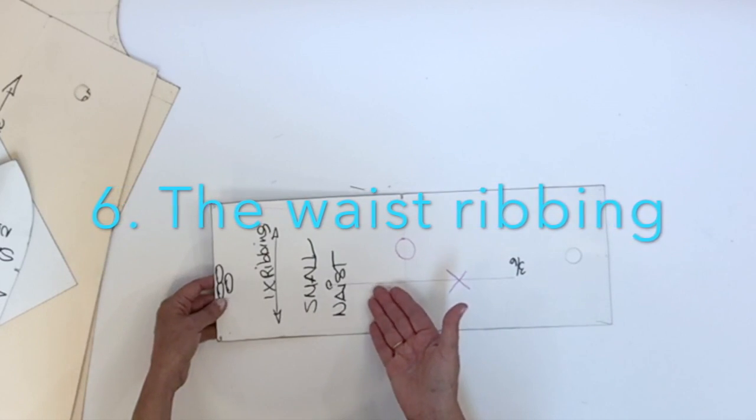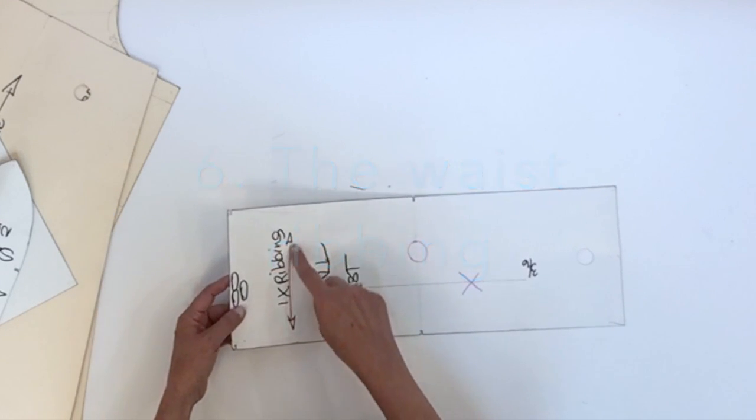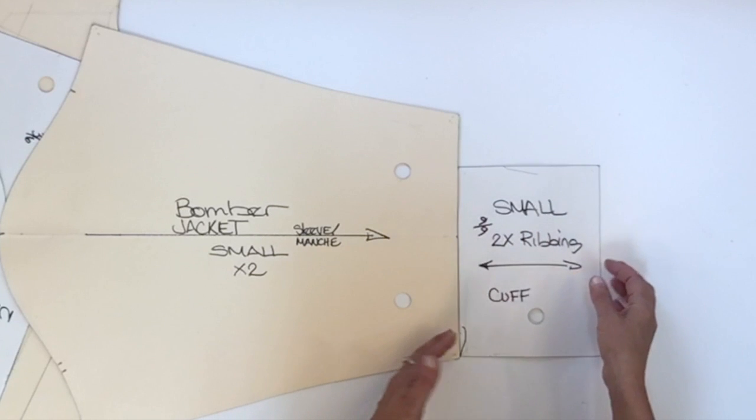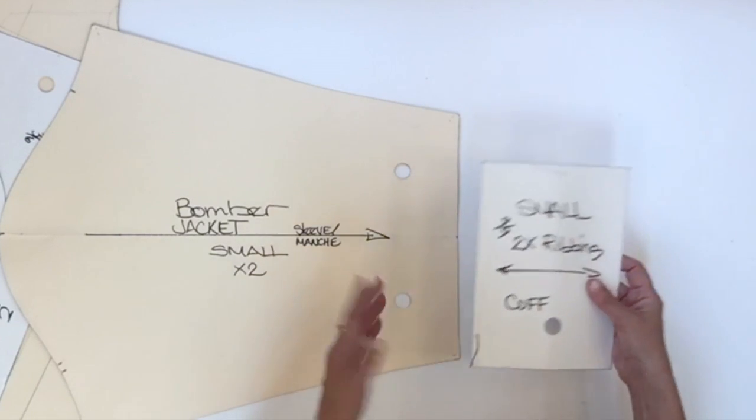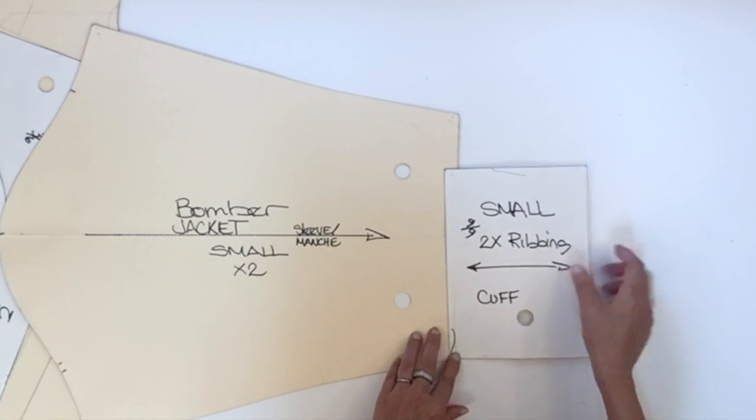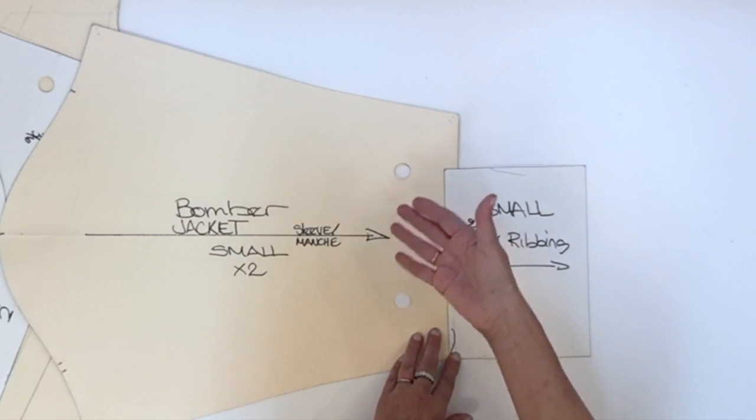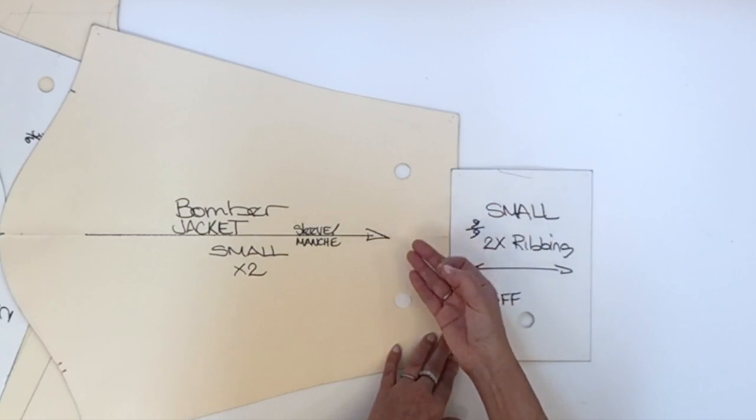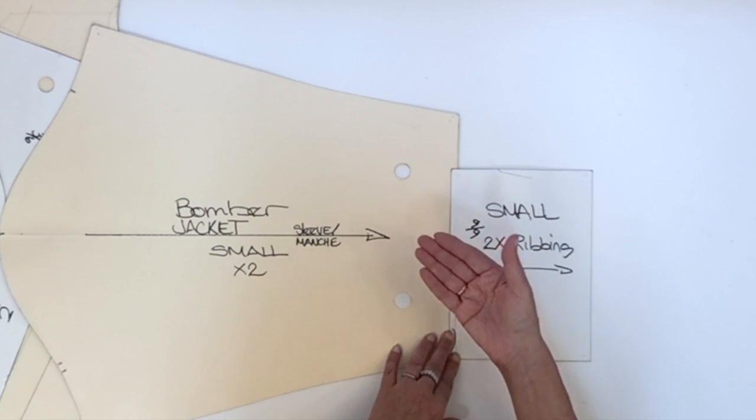Finally, the last piece is the waistband. It's also in ribbing, cut one because it's on fold. Now, about all the ribbing pieces, they have to be cut a little smaller than where you're going to sew it. I'm showing you on the sleeve, but it's the same idea at the waist or at the neck.